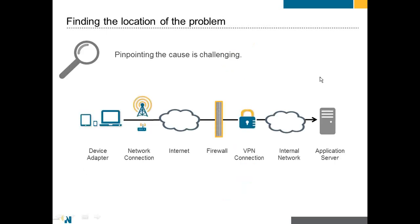When you think about any mobile worker — someone who works from home, someone out in the field, someone in a vehicle with a Toughbook or a tablet — the path that connection makes is generally the same. You start with the device itself: is it having a particular problem? What about the local network that device is connecting to? This could be a remote worker's home Wi-Fi, or someone on an air card out in the field. Is there a problem with that connection?